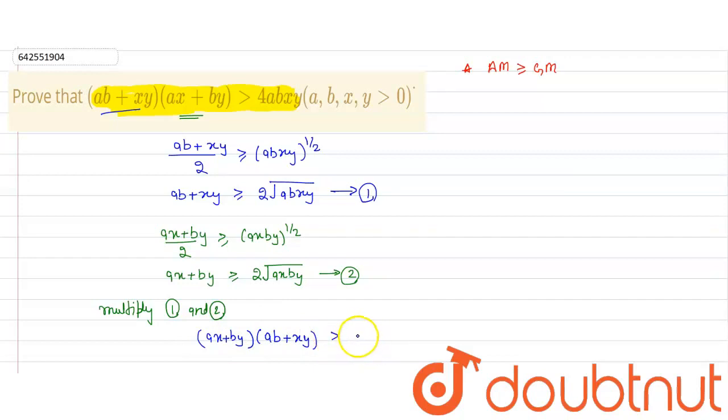That is 4 times this square, this square. This square root, square root multiplied becomes square. Square. Right? So, this becomes axby. Right? So, we proved our option.